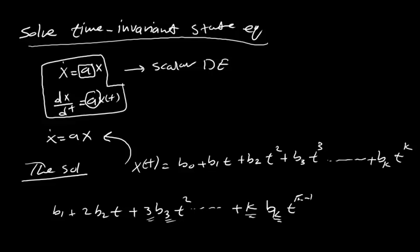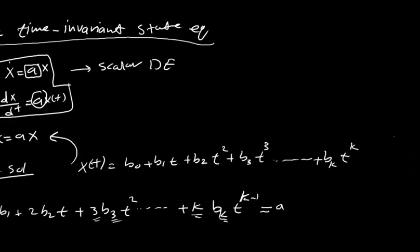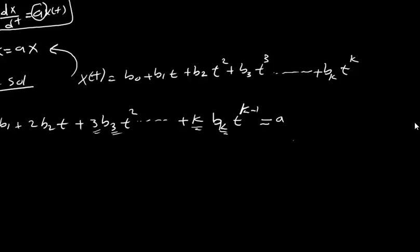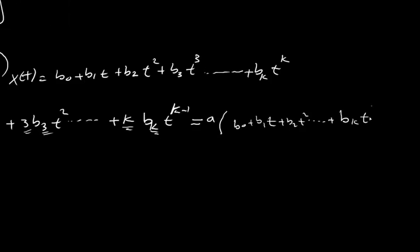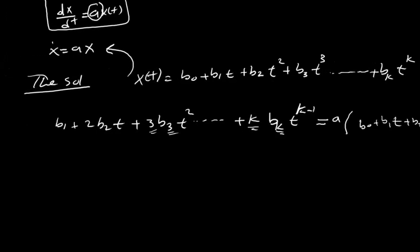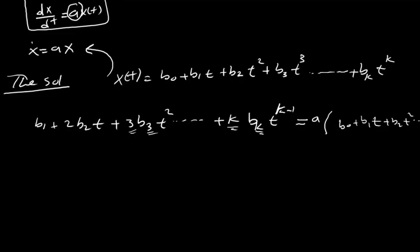This equals 'a' times x(t), which is the full series: a*b0 plus a*b1*t plus a*b2*t squared, continuing until a*bk*t^k.